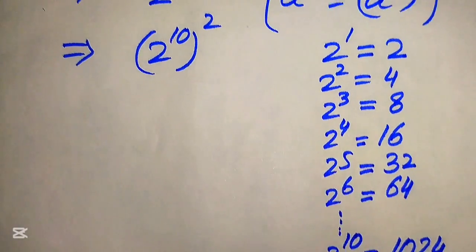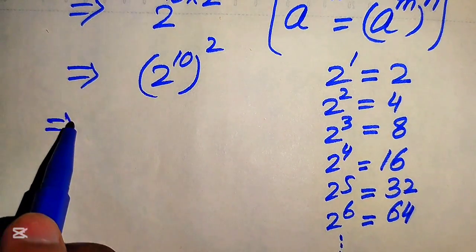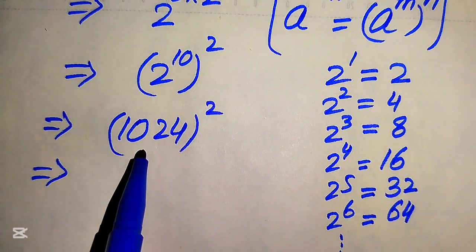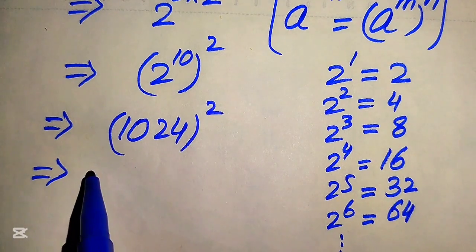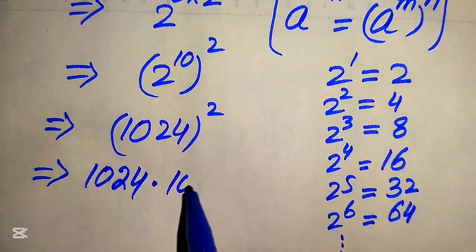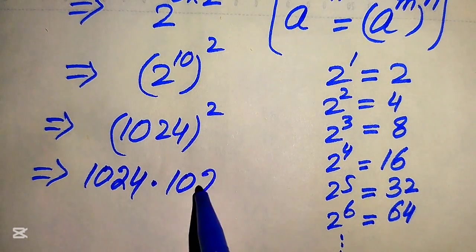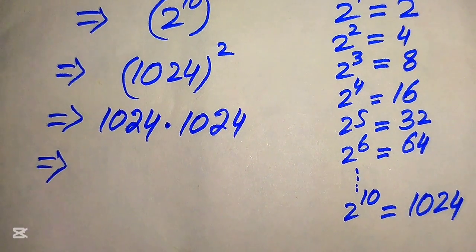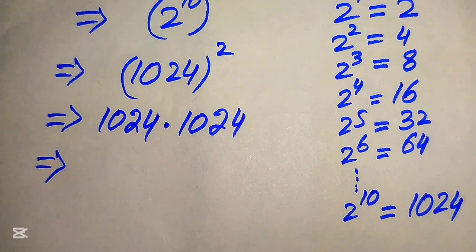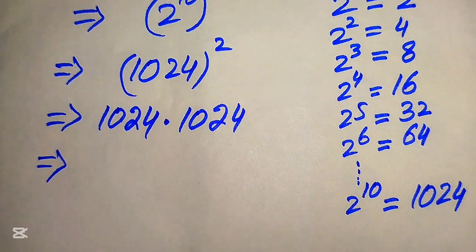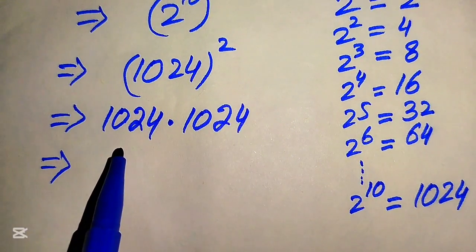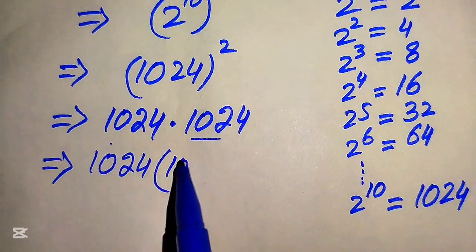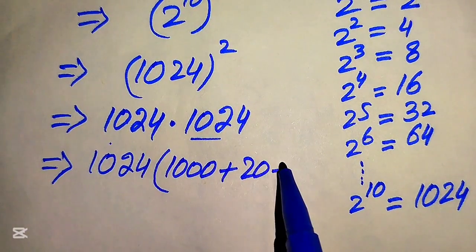We replace 2 to the power of 10 with 1024, so our expression becomes 1024 whole square. Now we need to compute 1024 squared, which means 1024 multiplied by 1024. Since these are bigger numbers and no calculator is allowed, I will show a smart method of multiplication. We break 1024 as 1000 plus 20 plus 4.